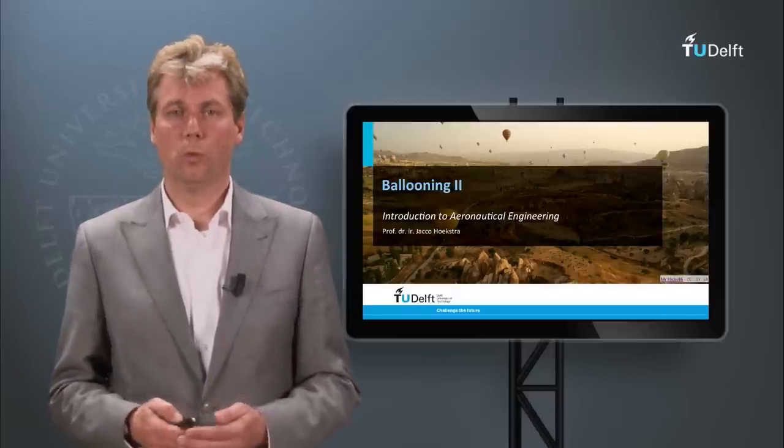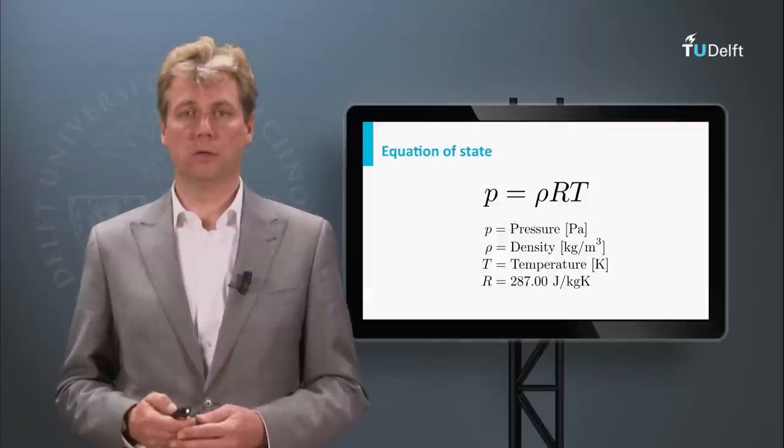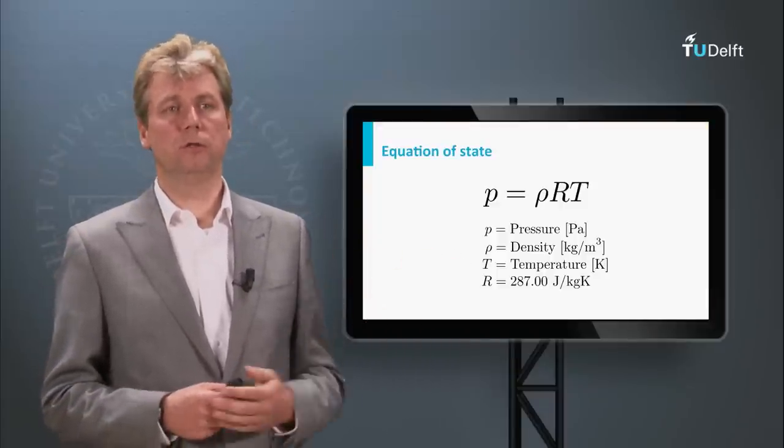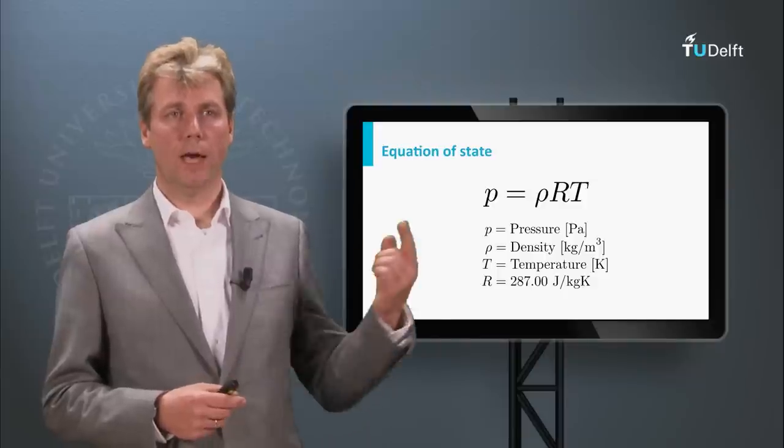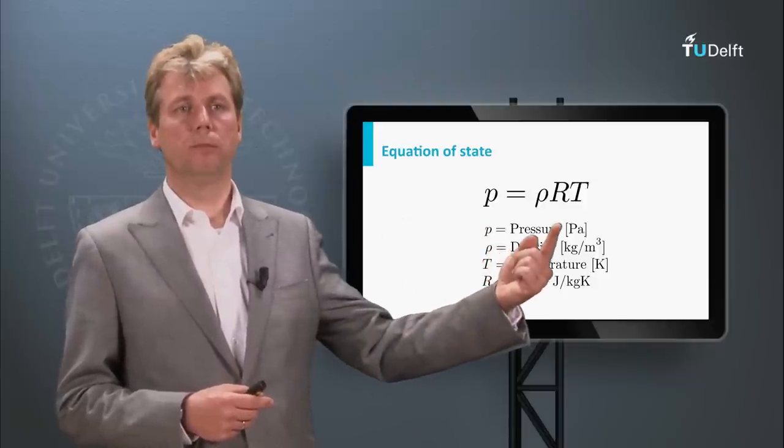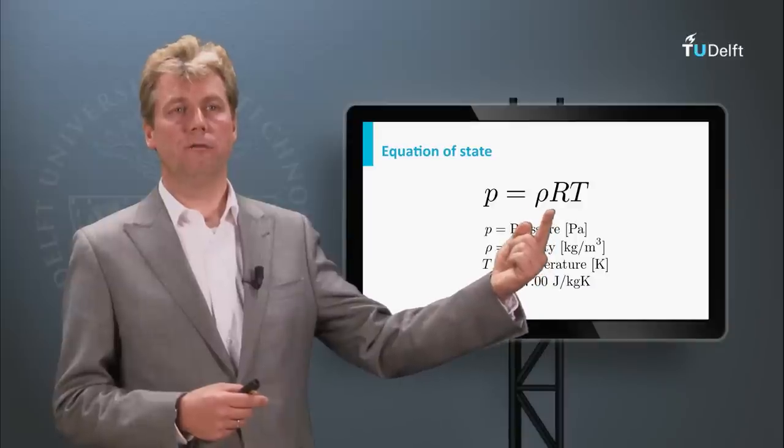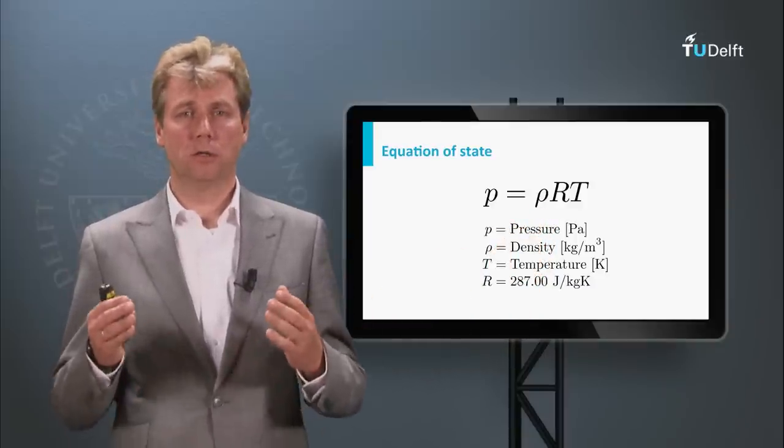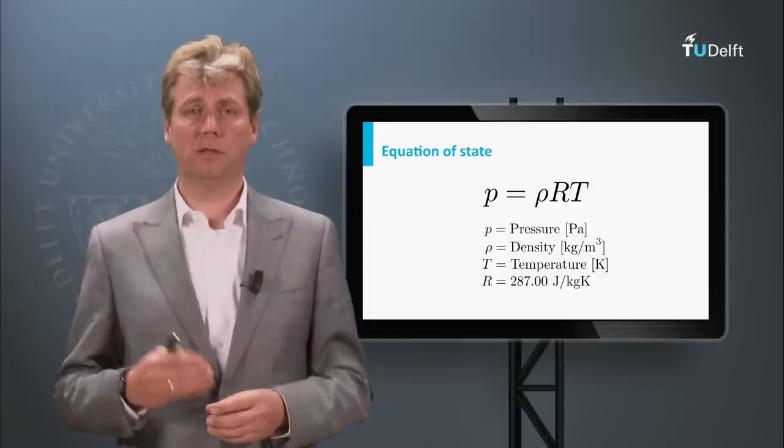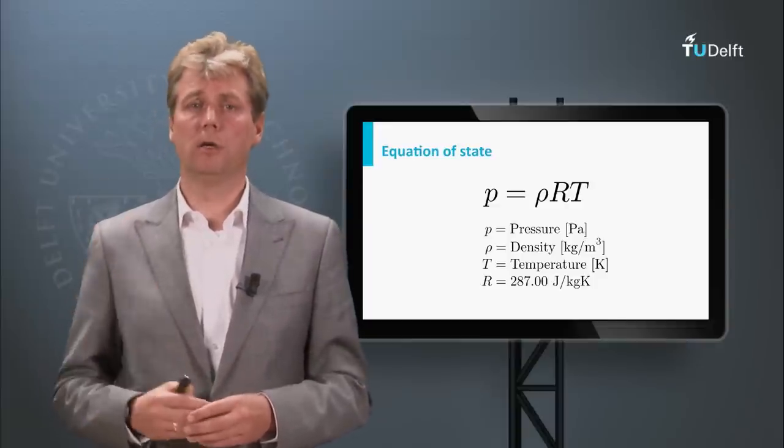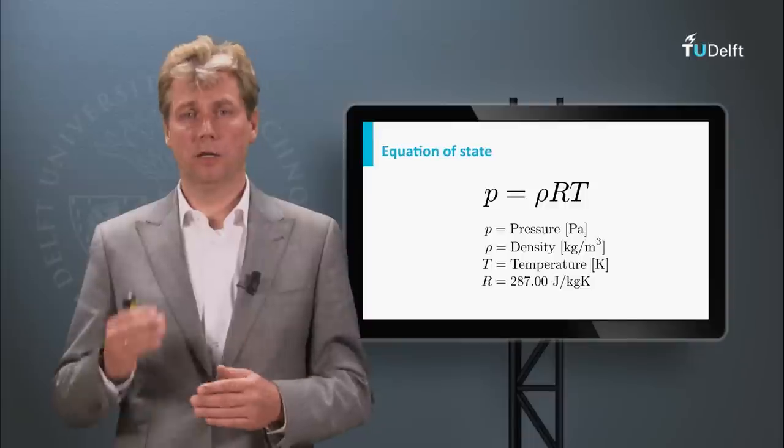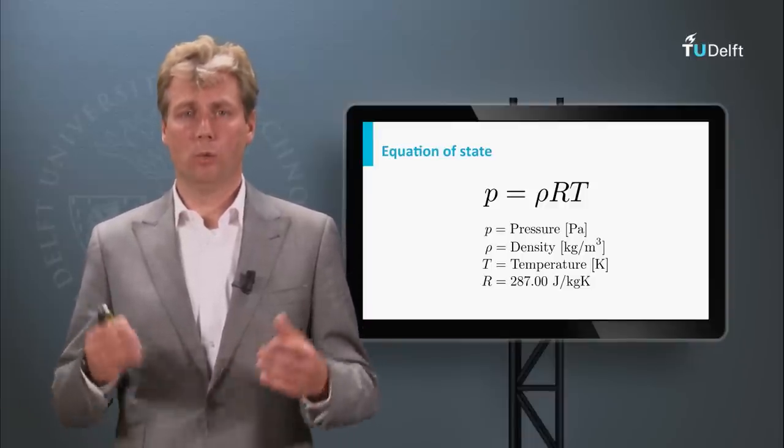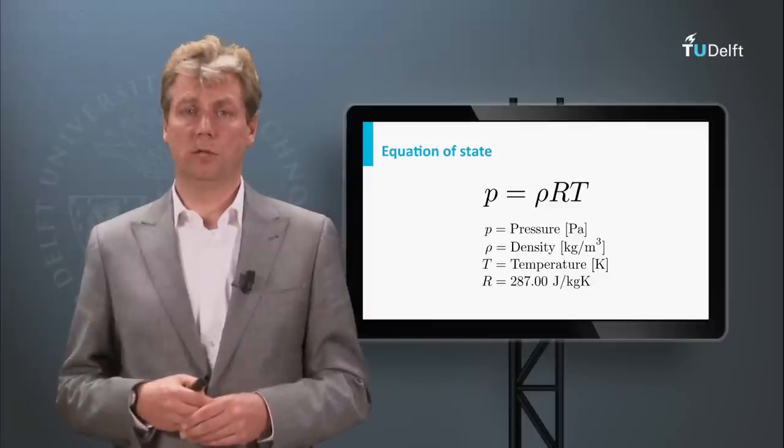Last time we derived our equation of state, which shows a different version of the gas law. We have to keep in mind that this R is not the universal gas law R, but the specific gas constant, equal to the universal R divided by the molar mass. When we look at different types of gas, we use different molar masses.